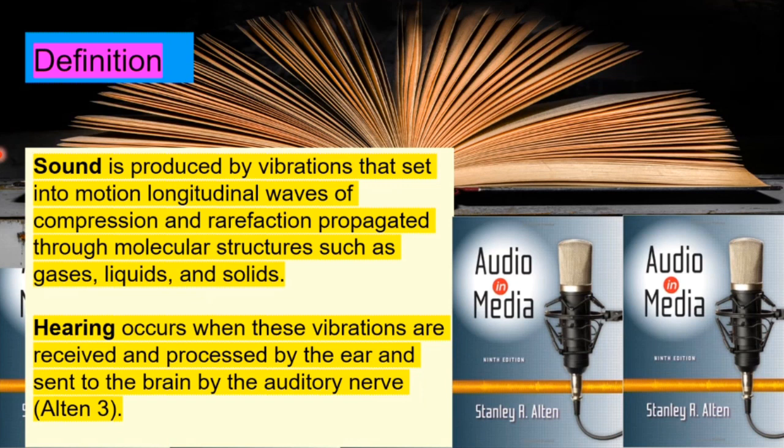So I'll read these to you. Sound is produced by vibrations that set into motion longitudinal waves of compression and rarefaction propagated through molecular structures such as gases, liquids, and solids. Hearing incidentally is whenever these vibrations are received and processed by the ear and sent to the brain by the auditory nerve. So just a good distinction. Sound is the physical phenomenon and then hearing is what happens in our brains by way of ears.